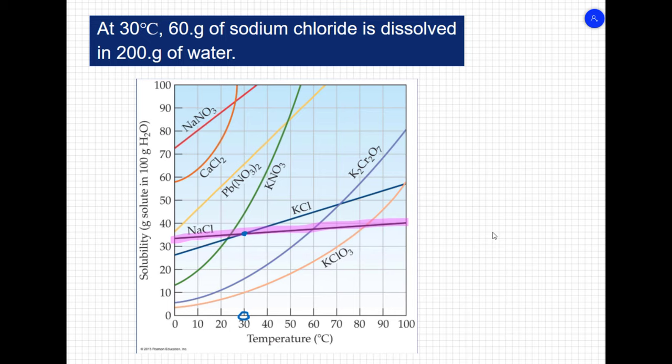Alright, so now where does that correspond in the y-axis? Well, that's going to be somewhere about here. So if I look at that, that's telling me somewhere around, well, let's just say halfway between 30 and 40. So that's telling me I'm getting 35 grams of NaCl. But that's 35 grams of NaCl that's being dissolved in 100 grams of water, right? That's what our y-axis says. So I have 35 grams of NaCl in 100 grams of water.